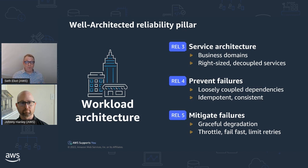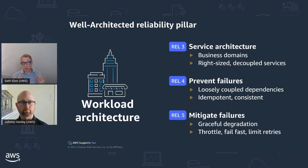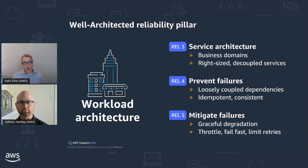Mitigating failures includes graceful degradation — if a dependency becomes unreliable, instead of passing the error back up the line, be intelligent: serve a static response, serve a cached response, or restrict certain traffic when under high load. Throttling, failing fast, and limiting retries are also important. When failures are about to happen and things are overloaded, your software should throttle requests and send back intelligent responses — like HTTP 429 Too Many Requests — rather than just falling over.